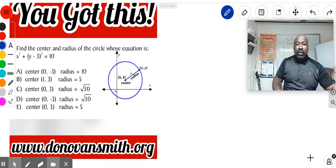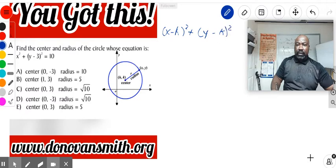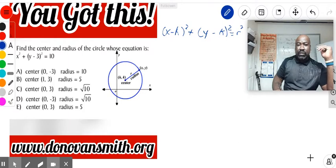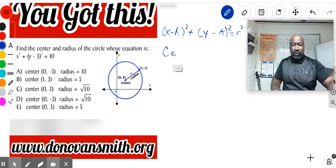Which is just two perfect binomials right here, and what you have here is x minus h, and this is y minus k squared equals r squared. And your center is just (h, k).